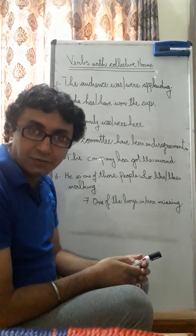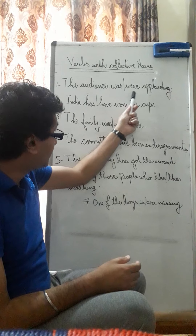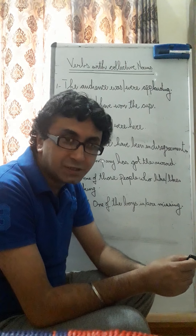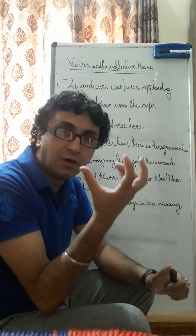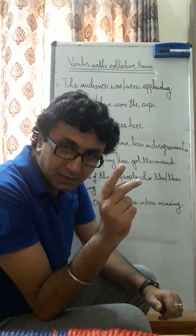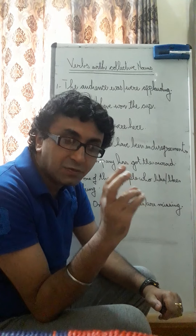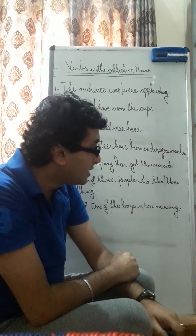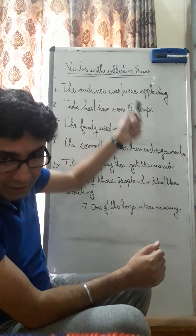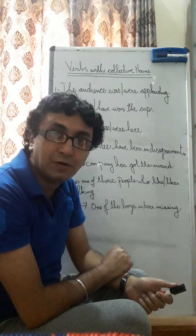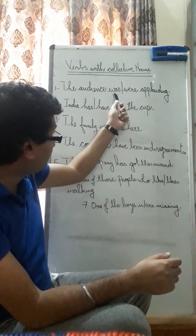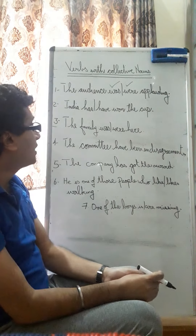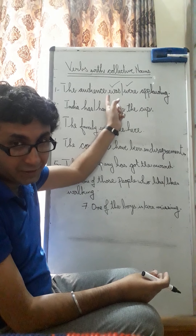If you are referring to everybody together, you use a singular verb. If referring to the members of a collective noun, use a plural verb. For example: 'The audience was applauding' means as a whole group they were applauding. 'The audience were applauding' means the members of the audience were applauding. Both are correct depending on your meaning. But if you go to America, you must say 'the audience was applauding' — there is no other way.